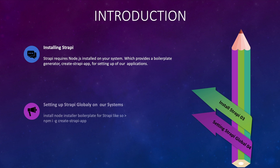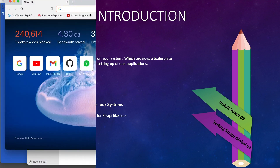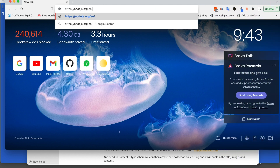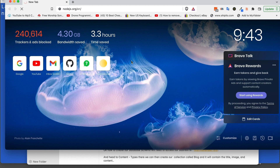Let's see how we can install and set up our Strapi application. In order to start, we have to know that Strapi requires Node.js to be installed on our system, which will provide us with a boilerplate generator — Create Strapi App — which will enable us in setting up our application. So you will need to install Node.js first on your system. To do that, we will just head to our browser and go to the Node.js URL.